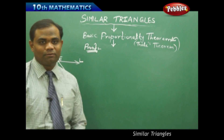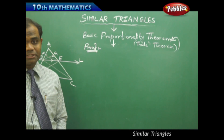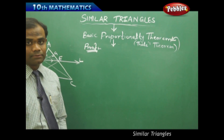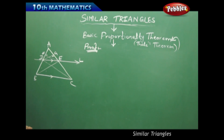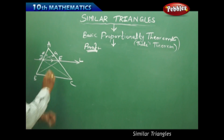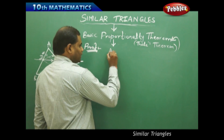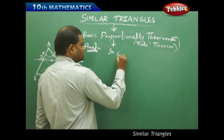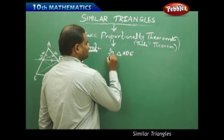Now let's see the proof of the Basic Proportionality theorem. I have a few constructions which I have made. Initially I am going to consider triangle ADE and observe what properties it has.